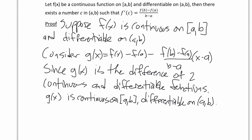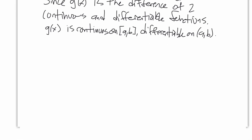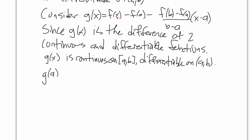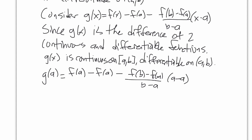g(x) is also continuous and differentiable. How does that help us? Let's investigate g(a). If we plug a into g(x), everywhere we see x we replace it with a. So g(a) equals f(a) minus f(a) minus f(b) minus f(a) over b minus a, times a minus a. Well, a minus a is 0, so that whole term goes to 0, and f(a) minus f(a) goes to 0 — so this whole thing equals 0. That makes sense: the vertical difference between the function and its secant line at the very left endpoint is 0; the function and its secant line are at the same point.